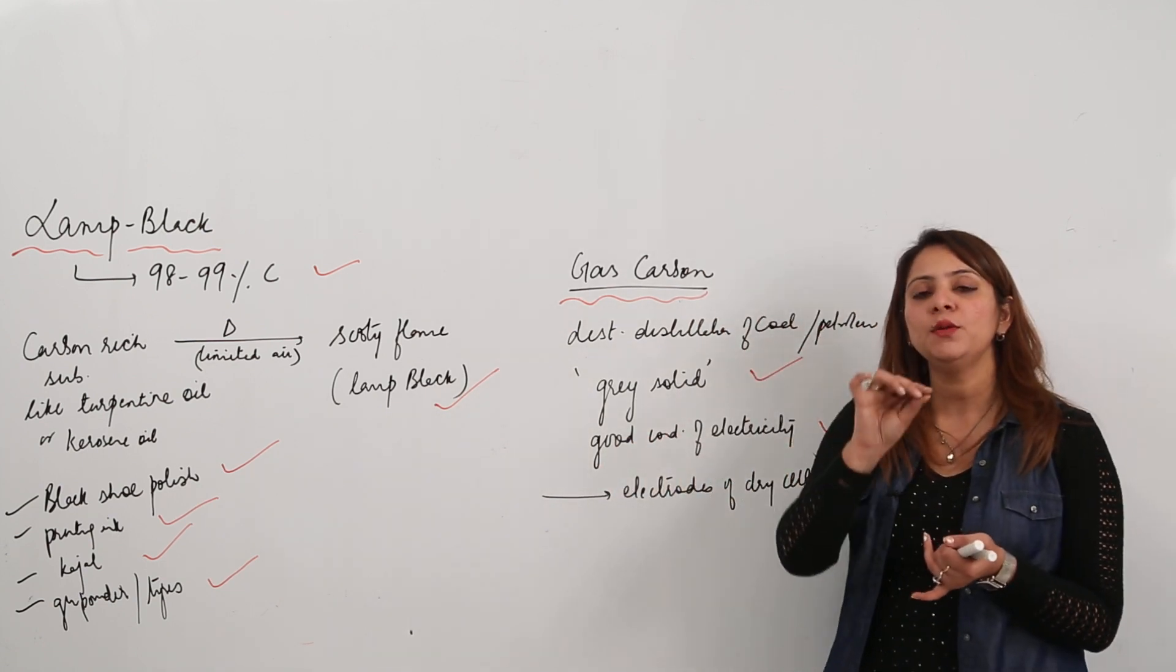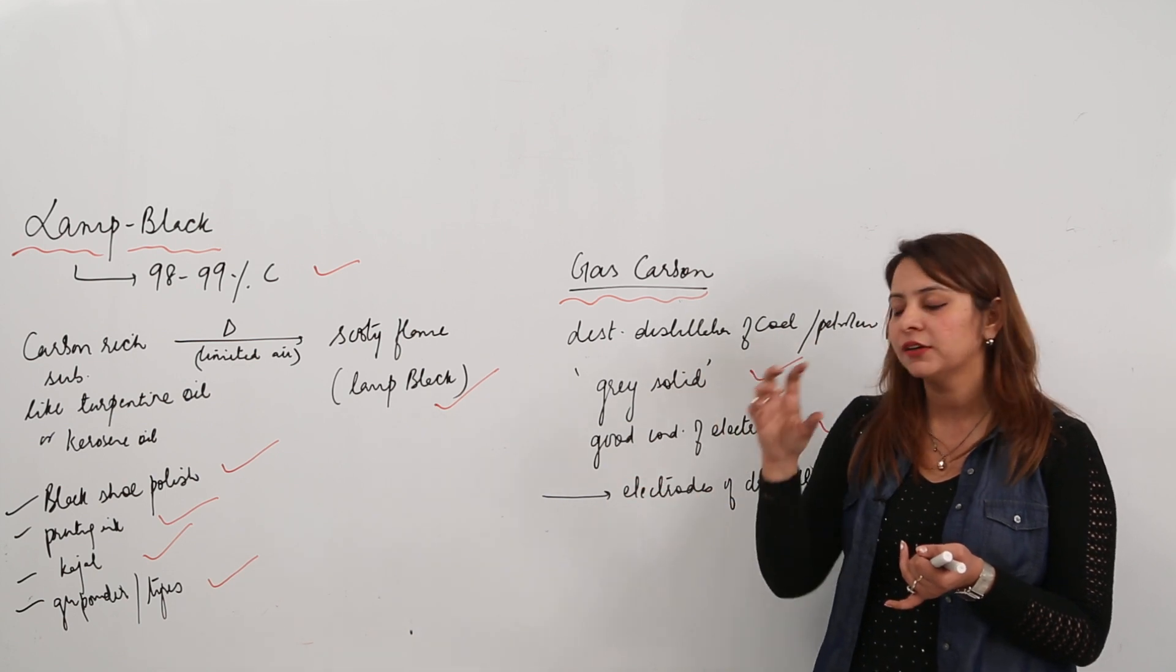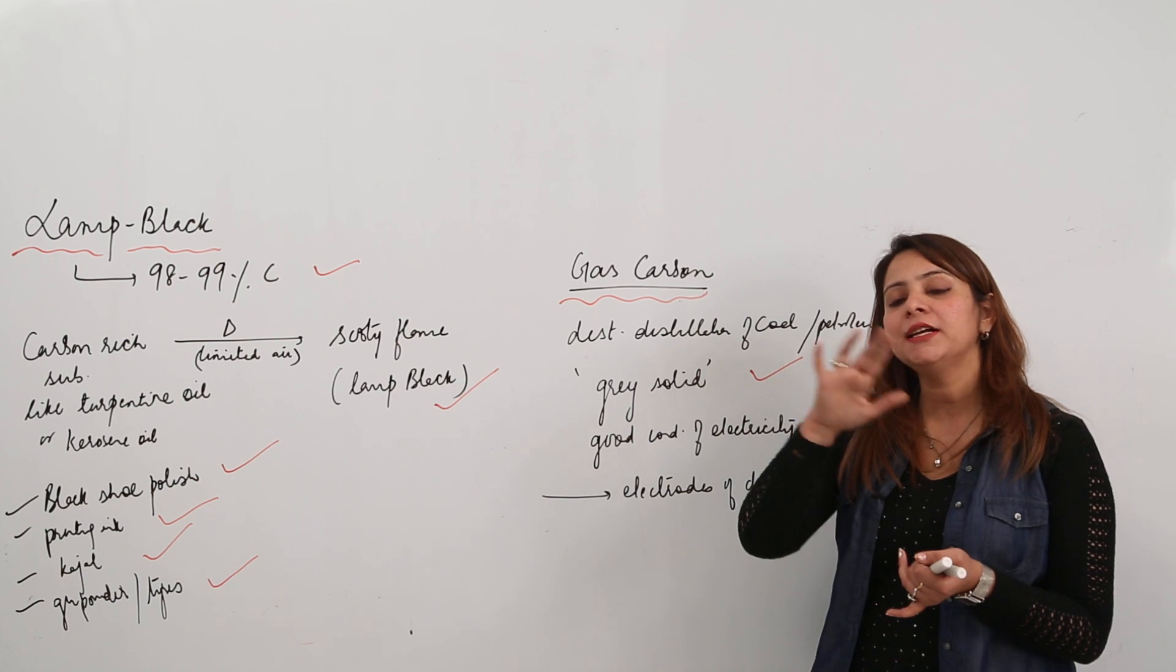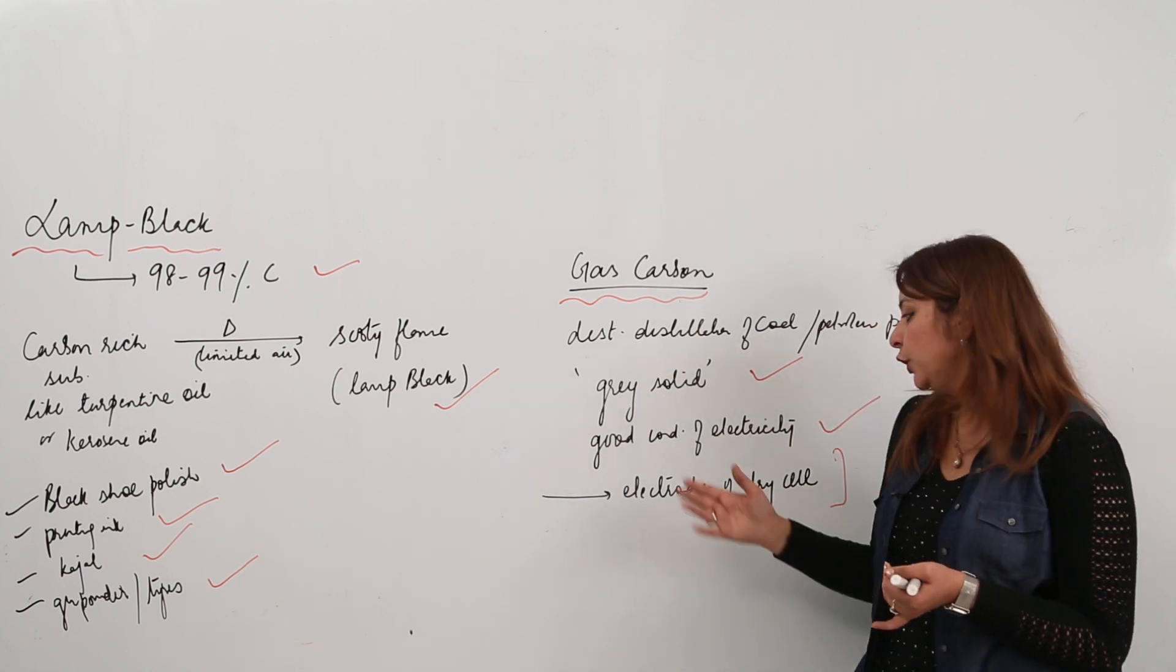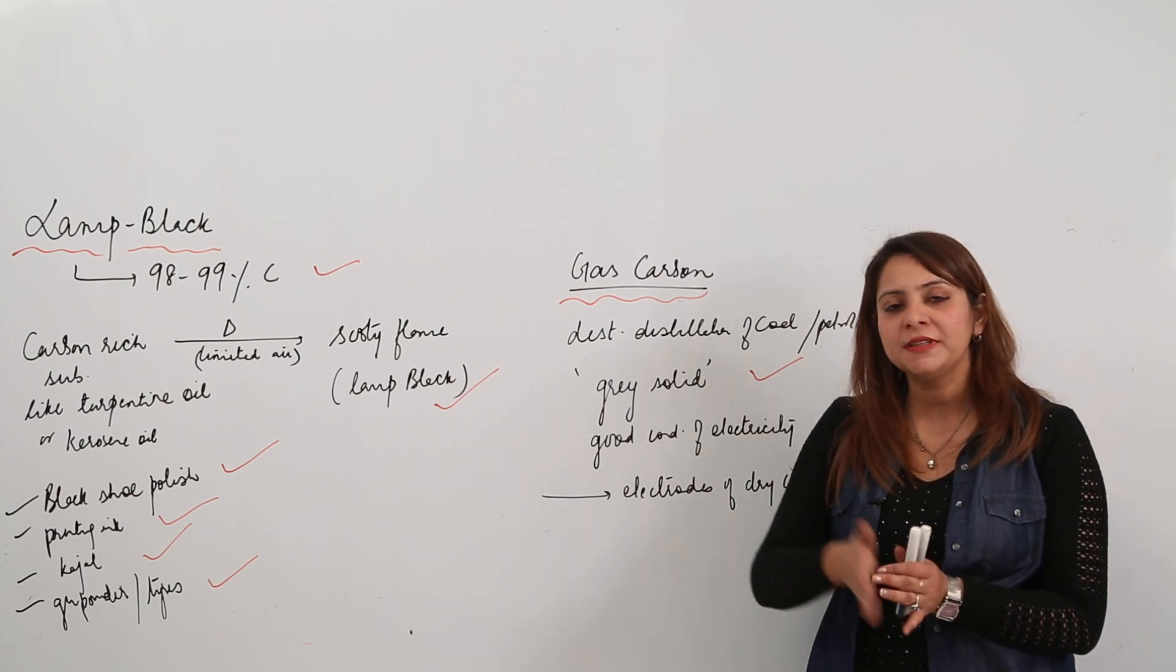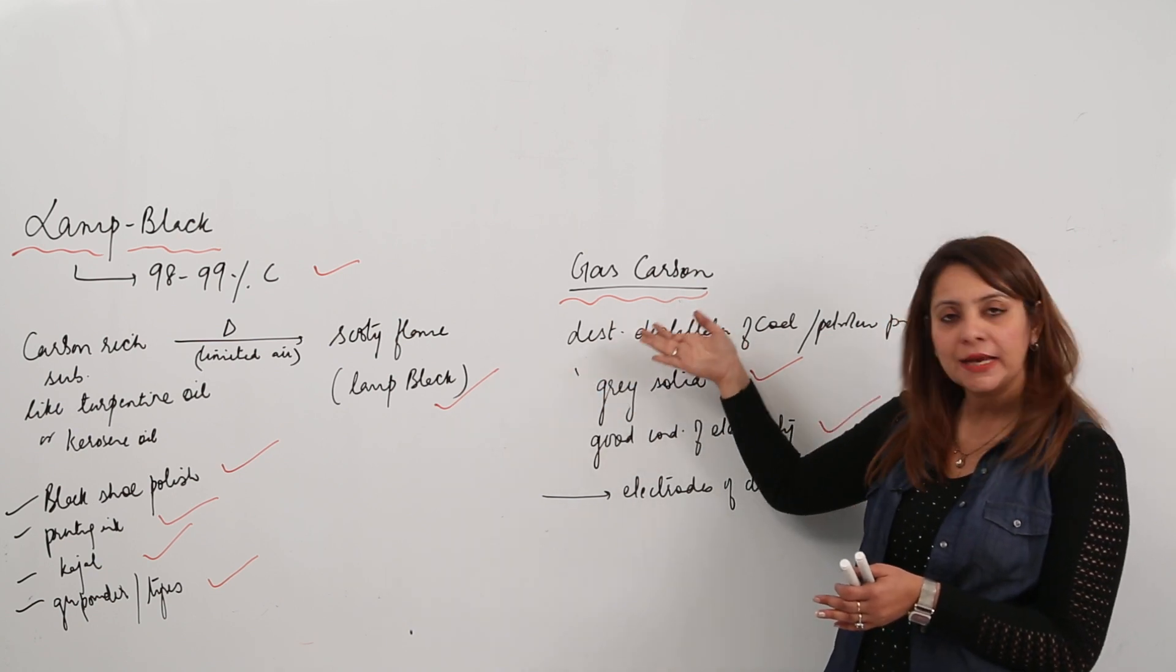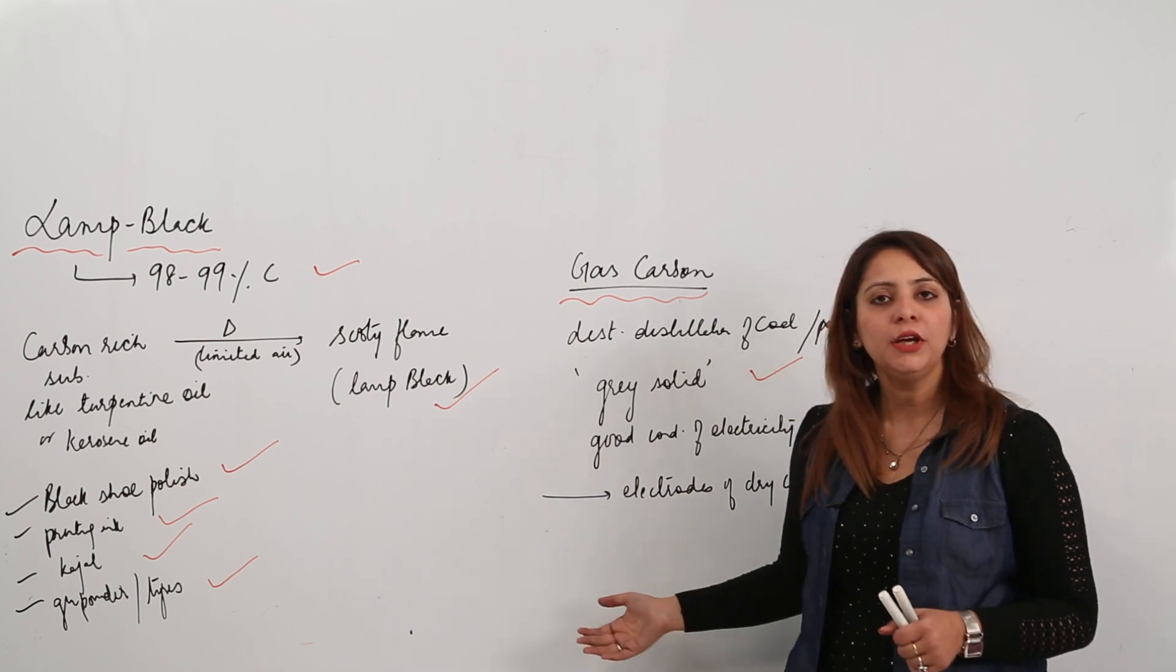Gaseous carbon is the one which sticks when you carry out destructive distillation of coal or any petroleum product - the particles which stick to the wall of the container. It's used in making electrodes of the dry cell. So this is all about the allotropes: diamond, graphite, fullerene as crystalline forms, and charcoal, lamp black, gas carbon, and coal as the amorphous forms.